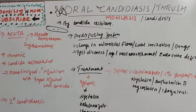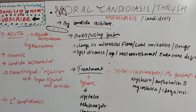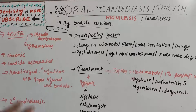Candida albicans lives as a harmless organism in the gut and genitourinary tract and is found in over almost 70% of the population. Overgrowth of these organisms, however, leads to infection or disease. It can be seen not just in the oral cavity but also on the skin, genitals, throat, mouth, and even blood.